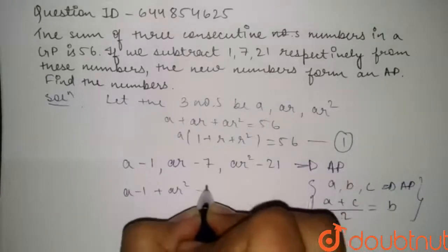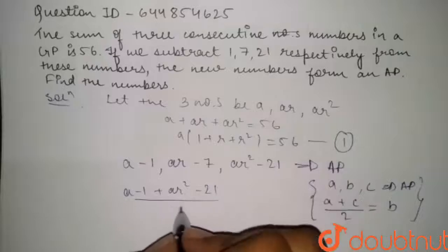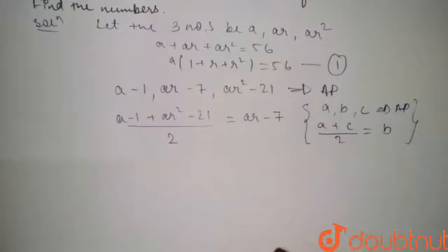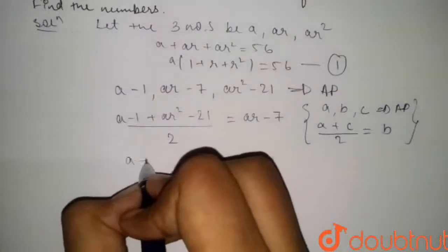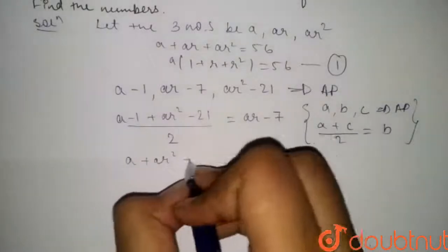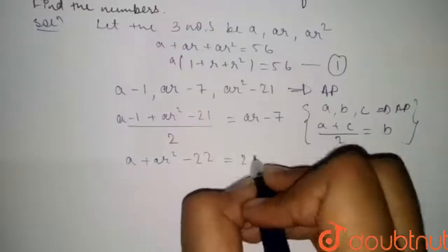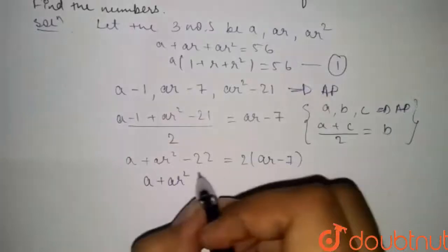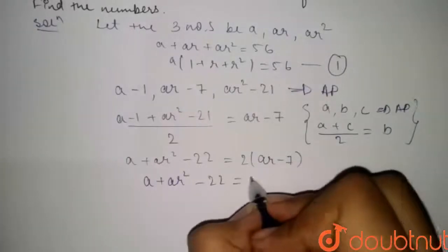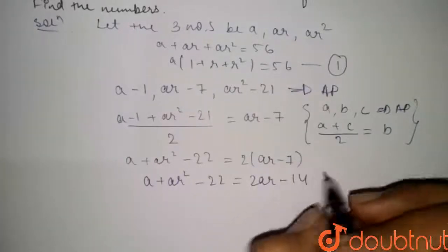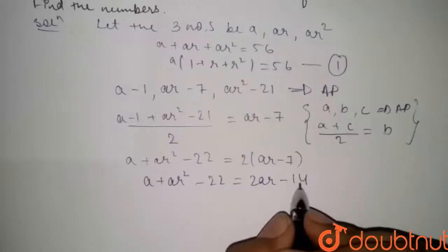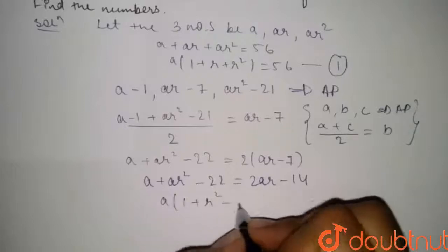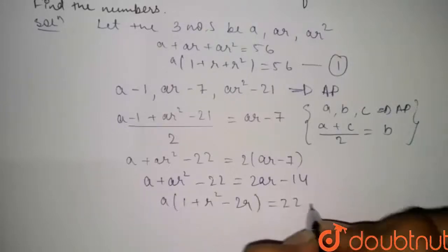Applying the AP property: (a − 1 + ar² − 21) / 2 = ar − 7. This gives a + ar² − 22 = 2(ar − 7), so a + ar² − 22 = 2ar − 14. Rearranging: a(1 + r² − 2r) = 22 − 14.